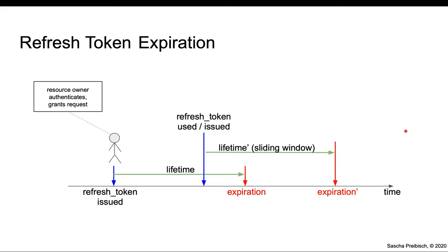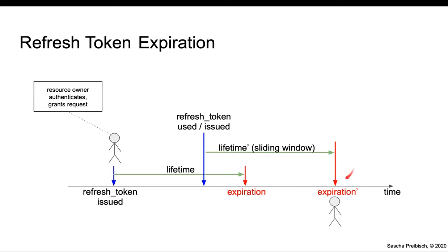You can see that if a user got involved in the beginning, and if this client is using the Refresh Token before it expires again and again, you can assume that your user is using your application constantly and often. But at some point, if the user stops using it, there will be an expiration and the user gets involved again.